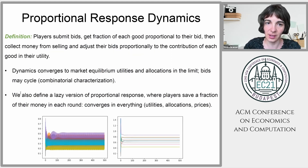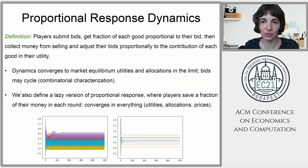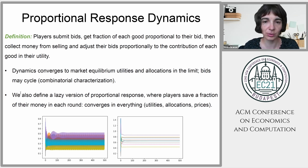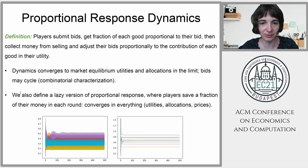In this work, we studied dynamics known as proportional response dynamics, where players submit bids on the good, they get a fraction of each good proportional to their bid, and then they collect the money made from selling and revise their bids proportional to the contribution in the utility. We studied these dynamics and showed they converge to market equilibria.